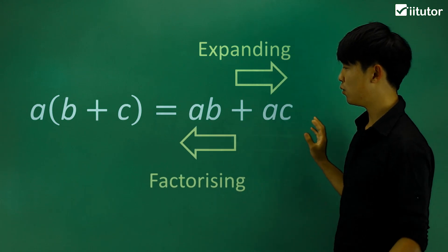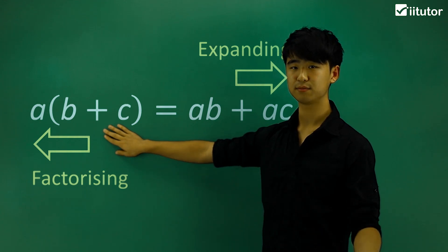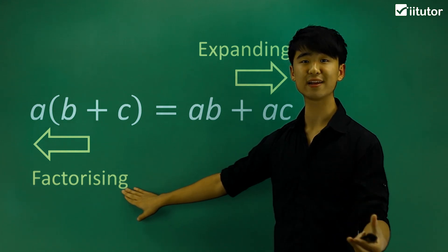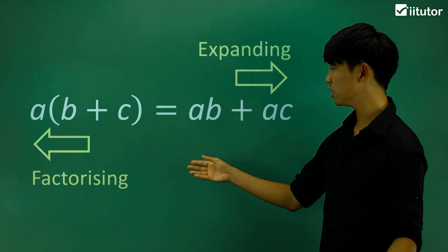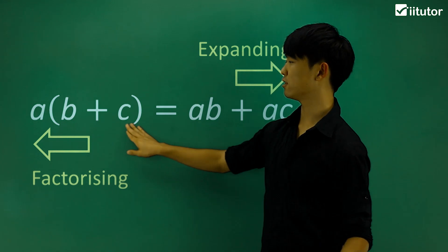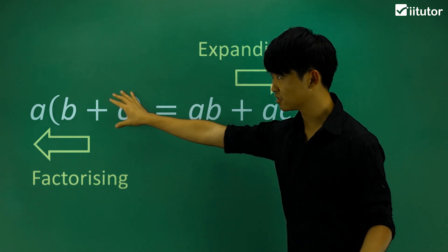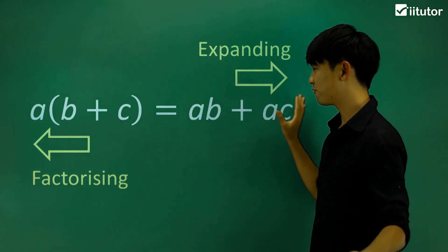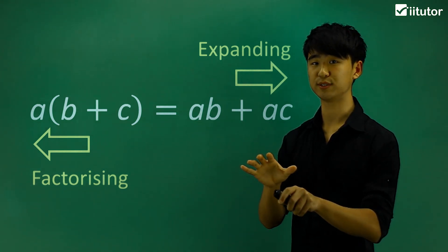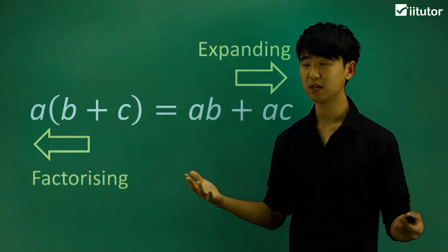Factorizing is the opposite to expanding. We're going to go from this expanded form, collect our factors, and write it in factorized form. From the word factorizing we have the term factor — we're collecting the factors that both terms have and writing the remaining terms in brackets. So from expanded to factorized is the reverse of expanding. Now that we know about factorizing, let's apply it to real questions.